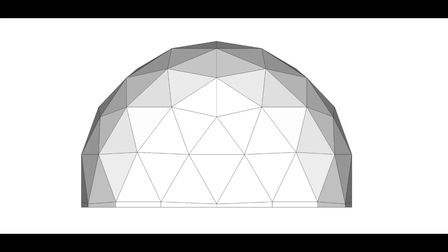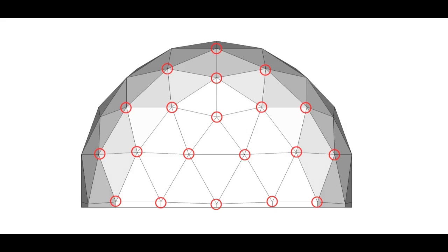We can do exactly the same from a side view to work out our wind load. We've got about 25 hubs across the cross section of a dome, so we need to divide—20, I should say—we need to divide the 800 kilogram wind load by 20, which works out at about 40 kilograms per hub.